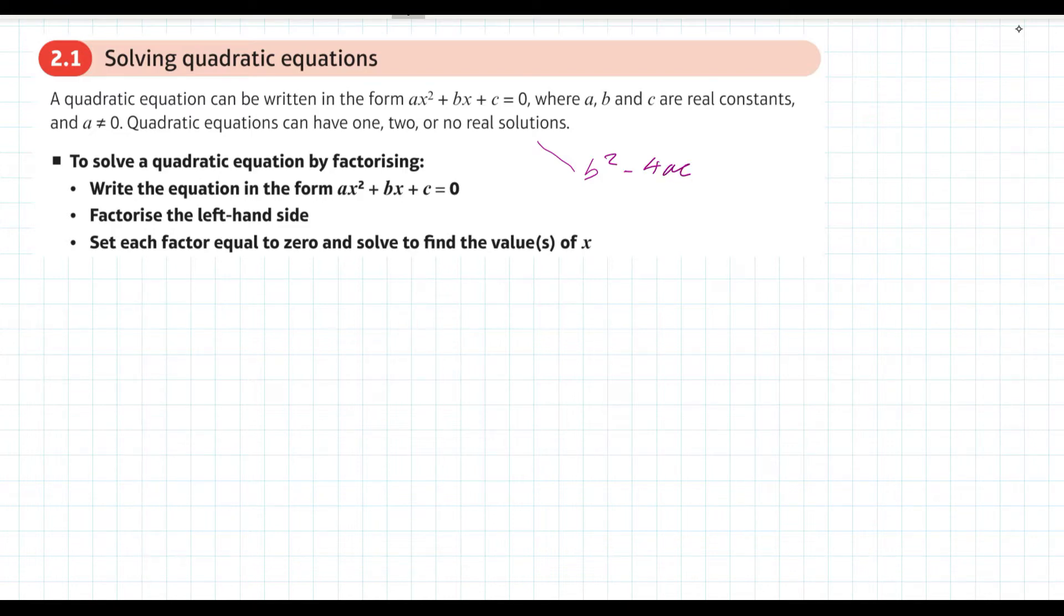We're going to go into this in more detail in later sections, but as a quick reminder, if that has a positive value, the quadratic equation can have two solutions. If it's zero, it will have just one solution. And if it's negative, there are no values of x that will satisfy the equation - it has no solutions.